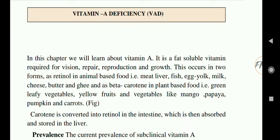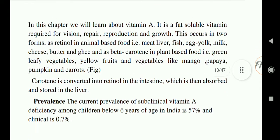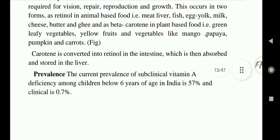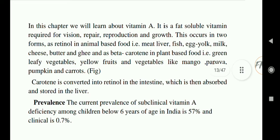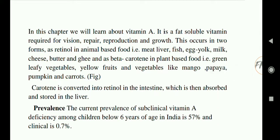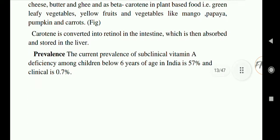The second form is beta-carotene found in plant-based foods, that is green leafy vegetables. All carotene is converted into retinol in the intestine, which is then absorbed and stored in the liver.